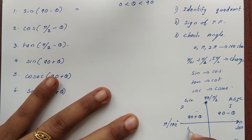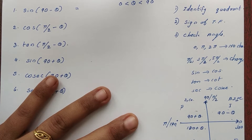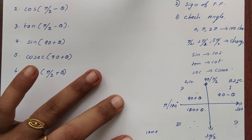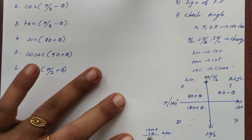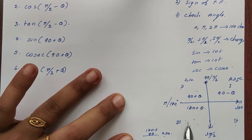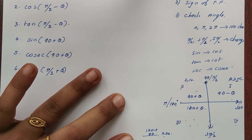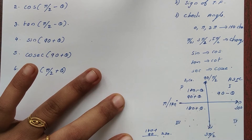For 180 plus theta, that is the third quadrant. If we take 180 plus theta — for example, 180 plus a small angle — that gives approximately 270, placing it in the third quadrant. For 180 minus theta, that is the second quadrant.